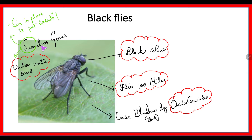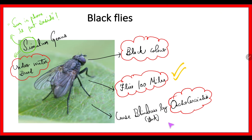Coming to black fly — it belongs to the genus Simulium. This fly enters water and lays eggs underwater, so it has underwater breeding. It is black in color. One important characteristic is that it can fly for 100 miles, making it very difficult to control. It causes river blindness — the important infection is onchocerciasis, which in turn causes blindness.